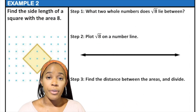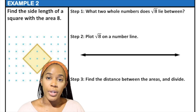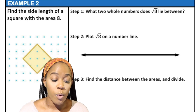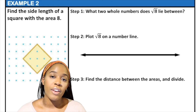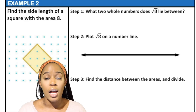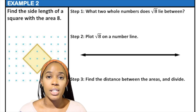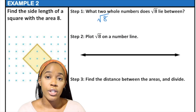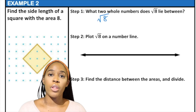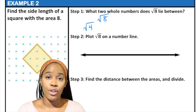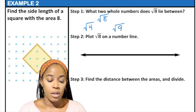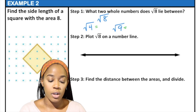Now we're going to try another example. We want to know what the side length of a square with an area of 8 units would be. The area is 8 units, so when we take the square root it'll give us the side length, but because it's not a perfect square it's not going to be a whole number — we need to estimate. We're looking for the square root of 8, or radical 8. For our lower perfect square we have radical 4, and for our larger perfect square we have radical 9. When we take the square root of these we find that the square root of 8 is going to be between 2 and 3.